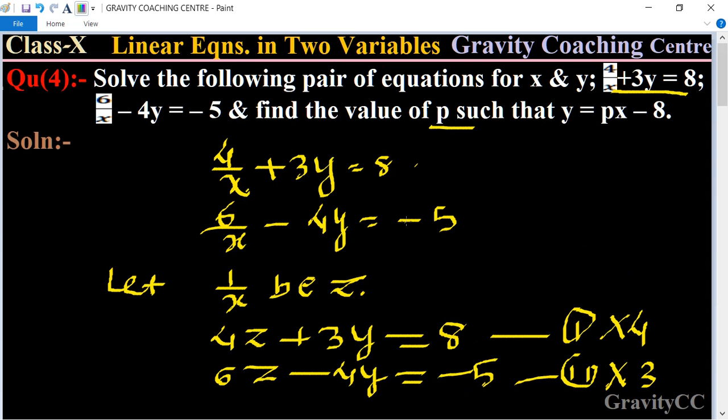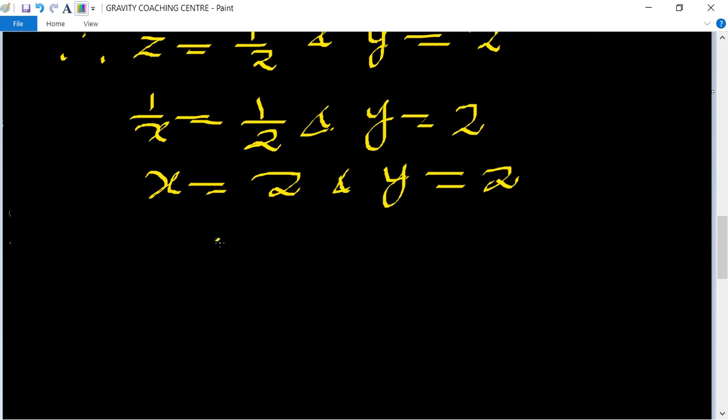Now we put the values of x and y in the equation y = px - 8. After putting x = 2 and y = 2, we get 2 = p(2) - 8.